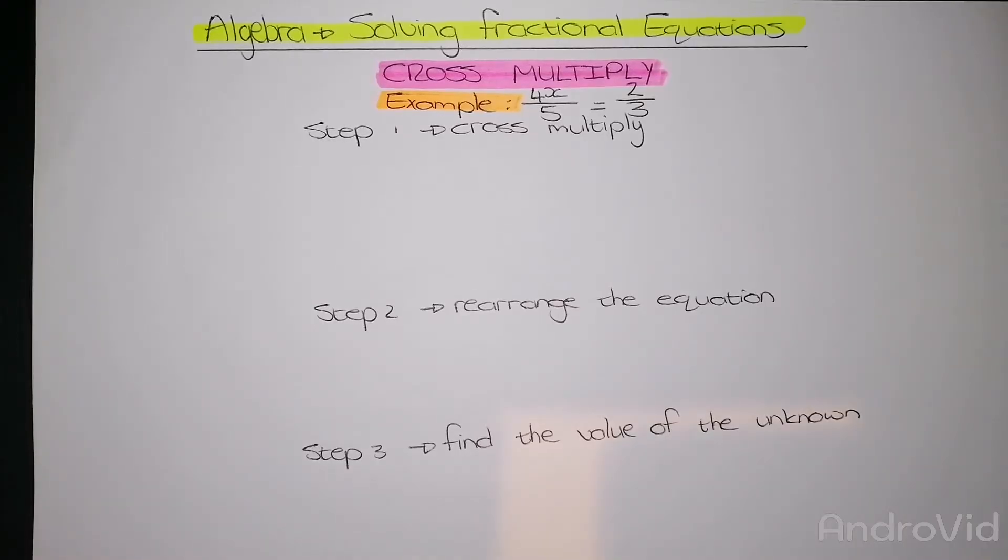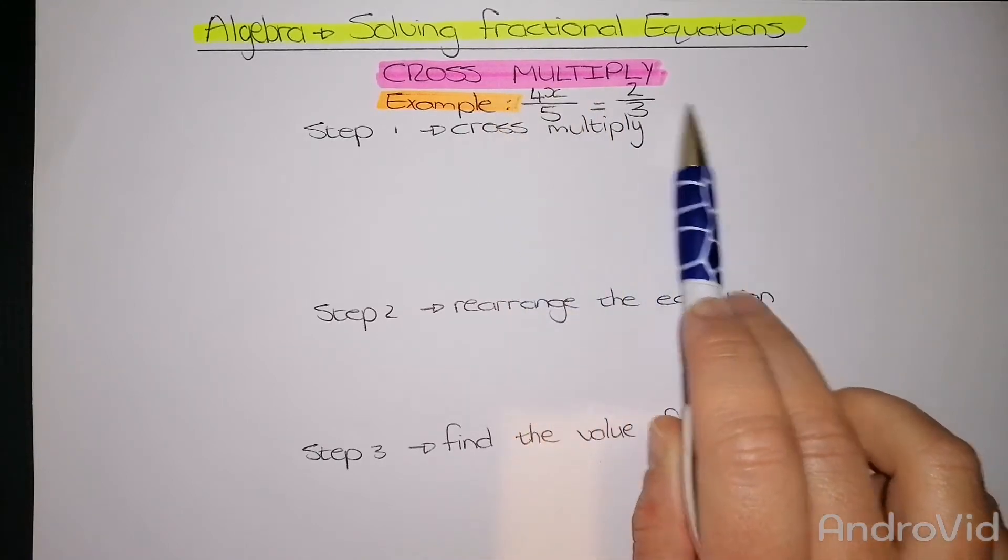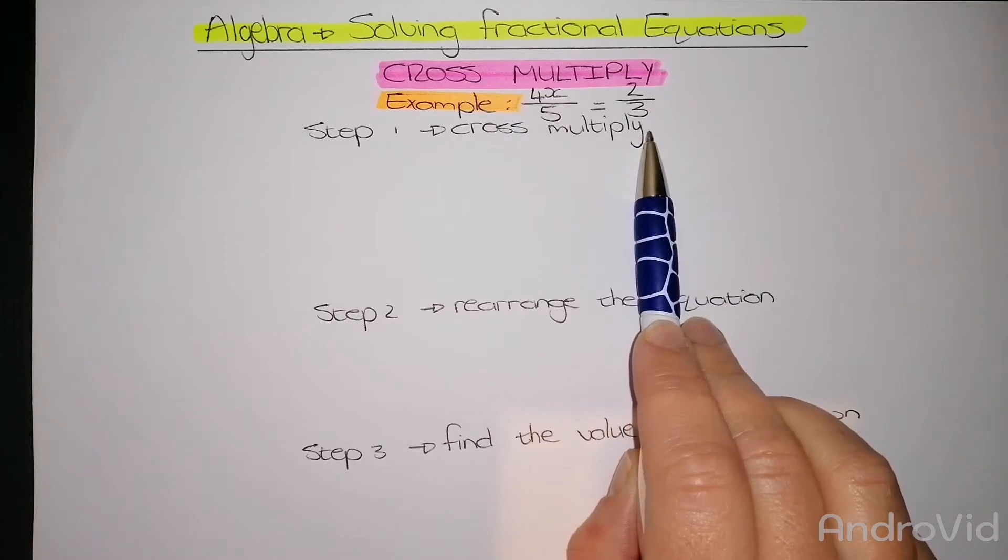When solving fractional equations, the method we use is cross-multiplication. To explain cross-multiplication, we are going to use the following example: 4x over 5 equals 2 over 3.